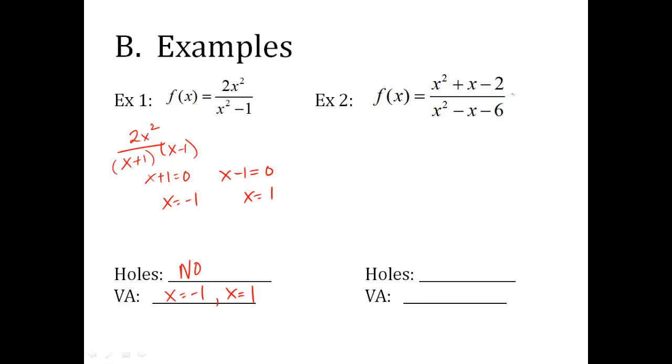Example two, I have to factor first. I do an F-darm. A times C is negative two. Two terms that multiply to give you negative two but add to give you one. Two, negative one. Divide by a. The top is going to be x plus two times x minus one. Bottom: negative six. Two terms that multiply to negative six but add to negative one is negative three and a positive two. Divide by a. So I get x minus three and x plus two.